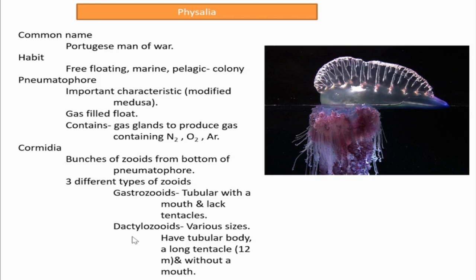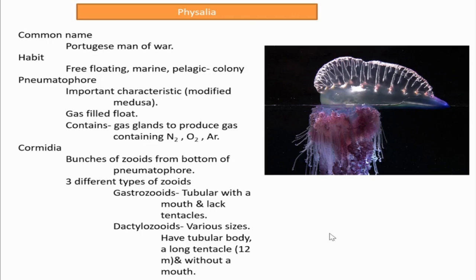The second type of zooid is the dactylozooid, which is defensive. Various sizes of dactylozooids are present in this colony. They have a tubular body with a long, highly elongated tentacle — most probably up to a meter in length. Dactylozooids do not have a mouth. The function of their tentacles is to capture prey and provide defense. After paralyzing the prey, it is transferred to the gastrozoid for feeding.